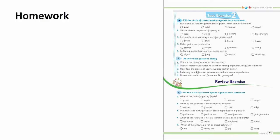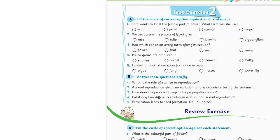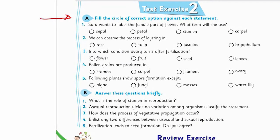You will now solve your homework. First, from Test Exercise 2, which you will find on page 39 of your CSS textbook. This is Part A — fill the circle of the correct option against each statement. You are provided with a single statement followed by 4 options. Analyze the statement carefully and read the options to find the right answer. From Part A, you will solve question number A: Sarah wants to label the female part of a flower — what term will she use?